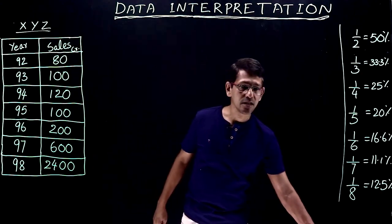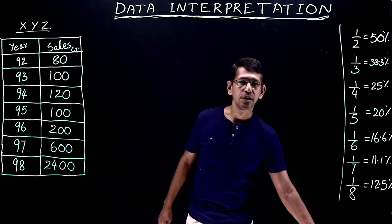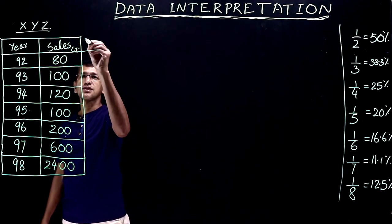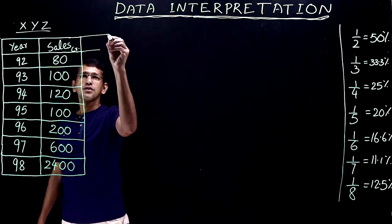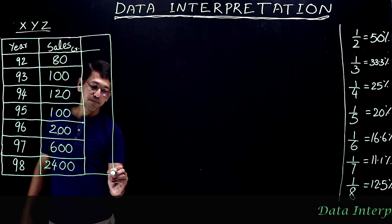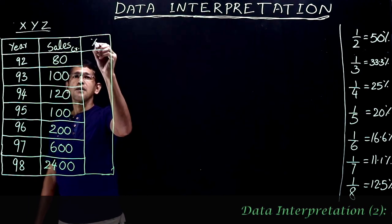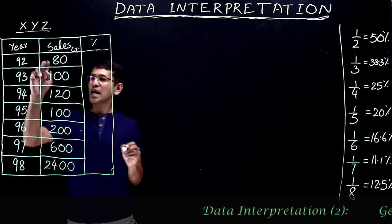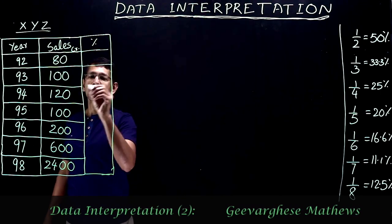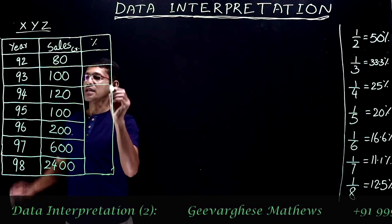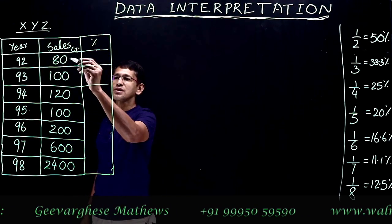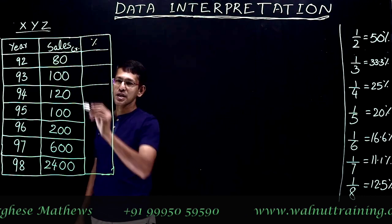Let's take a look at percentage changes in sales revenue. We'll add another column for percentage changes. From year 92 to 93, 80 became 100. So the actual change is 20 crores.